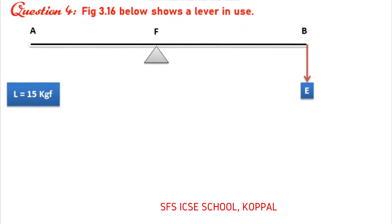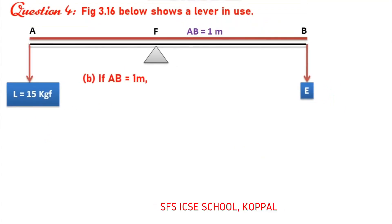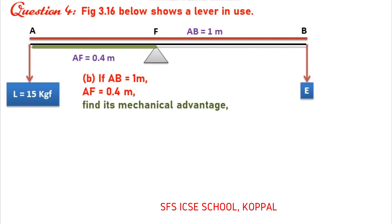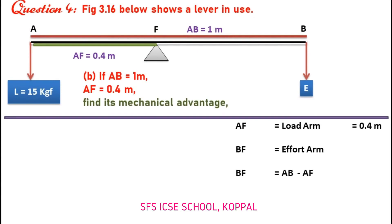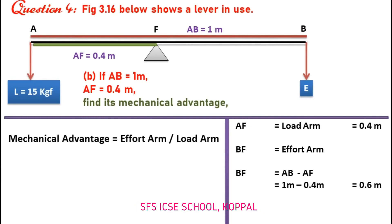Now, Part B: If AB is equal to 1 meter and AF is equal to 0.4 meter, find its mechanical advantage. We can see that AF is equal to load arm, which is 0.4 meter. BF is equal to effort arm — BF equals AB minus AF, which is 1 meter minus 0.4 meter, equal to 0.6 meter. So mechanical advantage equals effort arm divided by load arm, which is 0.6 divided by 0.4, giving the answer 1.5.